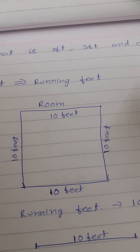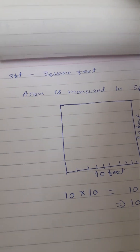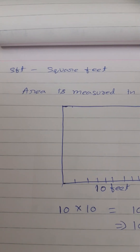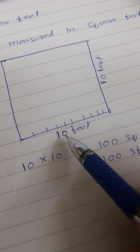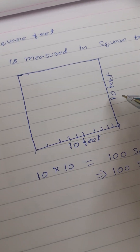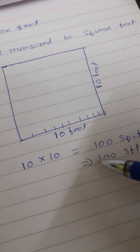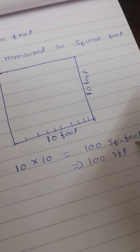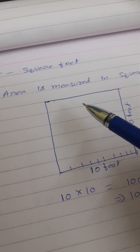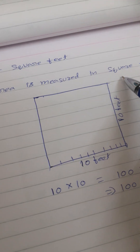Now coming to square feet — what is square feet? Square feet means it is the area of the room. If we have to calculate the area of something, area means length into breadth. So area is nothing but length into breadth. Like length is 10 feet and breadth is 10 feet — 10 feet into 10 feet — that is 100 square feet. So this is called SFT, and the area is measured in square feet.